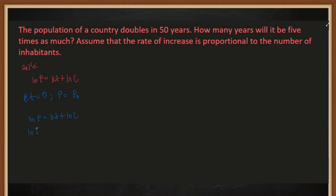Our P is equal to P sub zero, so we have ln(P₀) equals K times zero plus ln(C). From this we can now solve for ln(C). So ln(P₀) equals ln(C), giving us the value of ln(C) which is equal to ln(P₀).